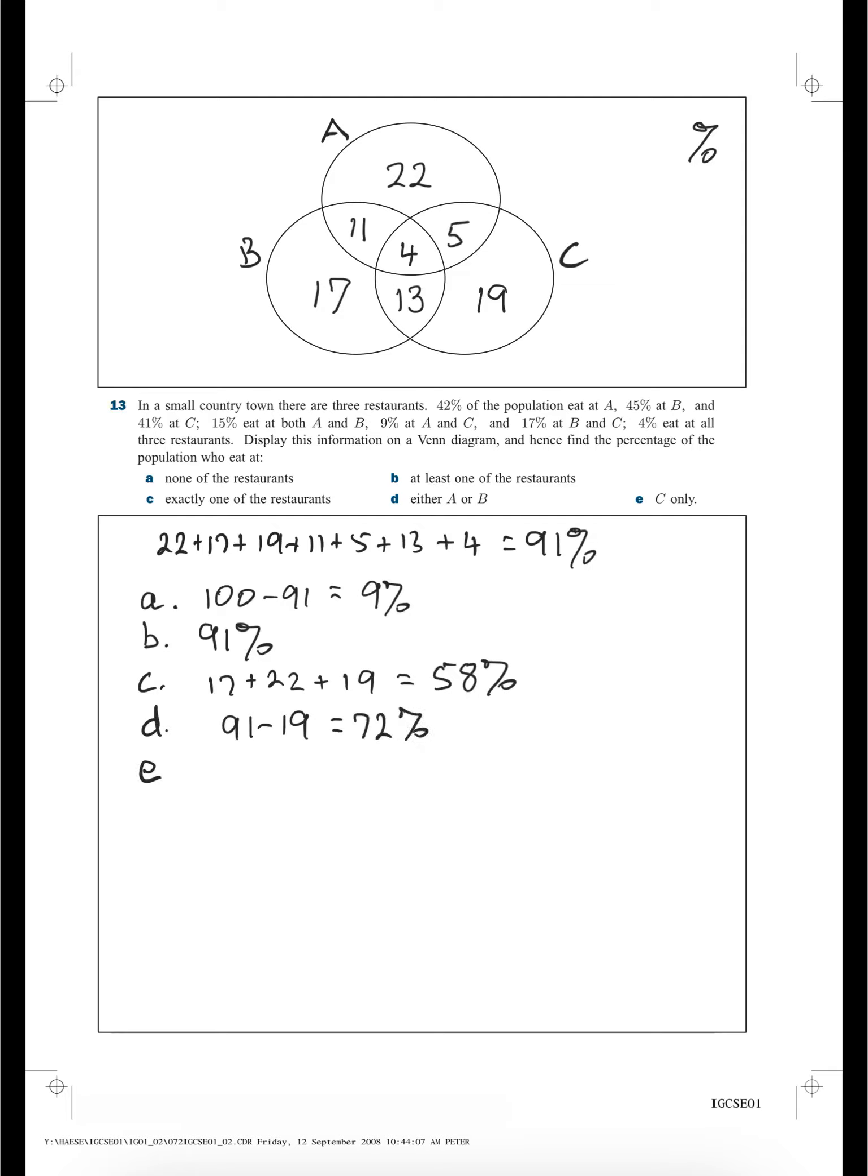And the last one, E. So E is C only. C only is this area in here. That's 19%.